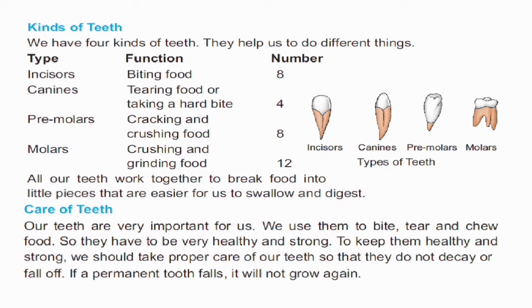Kinds of teeth. There are different types of teeth. We have 4 kinds of teeth and they help us to do different things. You can see here the types, then their function, and then their number.